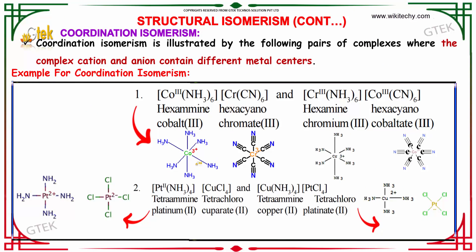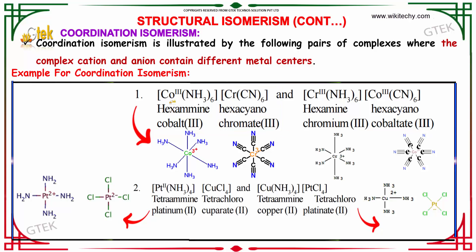Here is the example. You have a complex cation and complex anion — mixed up. CO joined with amine here, and CO joined with cyanide here. Chromium joined with cyanide and chromium joined with amine here. So there is coordination isomerism.